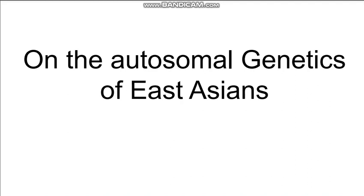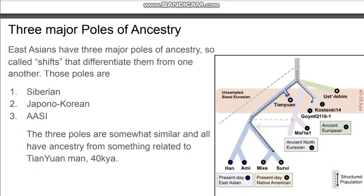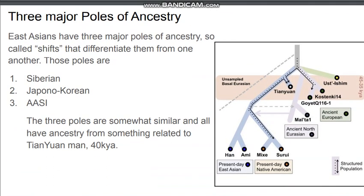This is a video on autosomal genetics of East Asians. East Asians have three major poles of ancestry — so-called shifts that differentiate them from one another. Those poles are: number one, Siberian; number two, Japono-Korean; and number three, AASI, which stands for Ancient Ancestral South Indian.